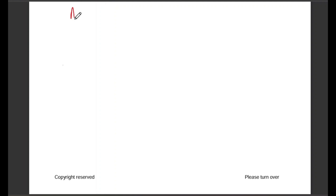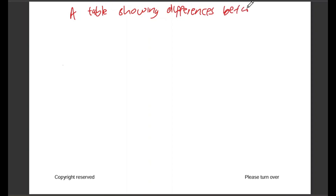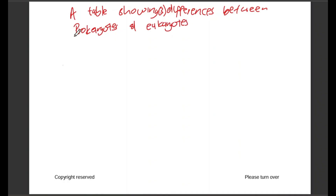The table we are going to draw is a table showing three differences between prokaryotes and eukaryotes. Underline your heading. You start your heading by telling us that this is a table — what is this table showing us? Differences between prokaryotes and eukaryotes. I'm going to change my color and use black now.